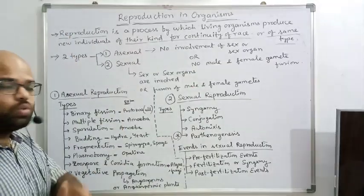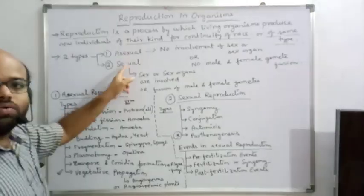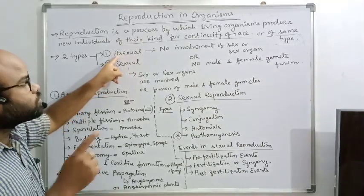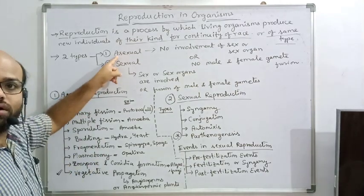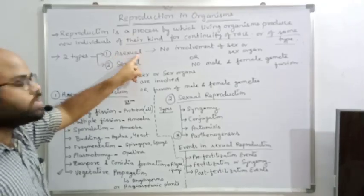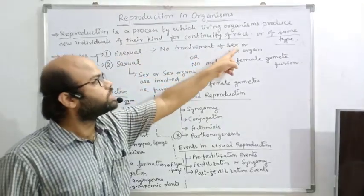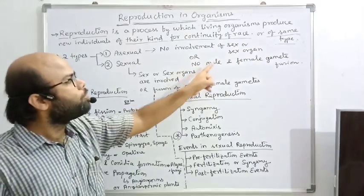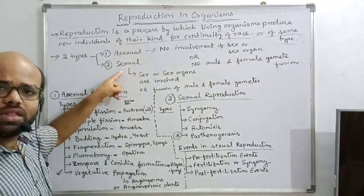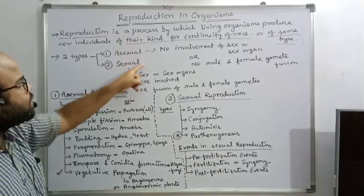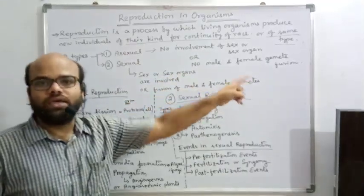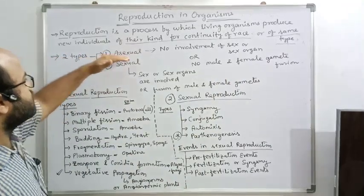Reproduction is basically of two types: asexual and sexual. We all know that 'A' as a prefix in biology means 'no.' But in biology, if it is used as a prefix, this means no. Asexual means no sexual — no involvement of sex or sex organs, or no male or female gamete fusion. Sexual, on the other hand, means involvement of sex or sex organs, meaning fusion of male and female gametes.